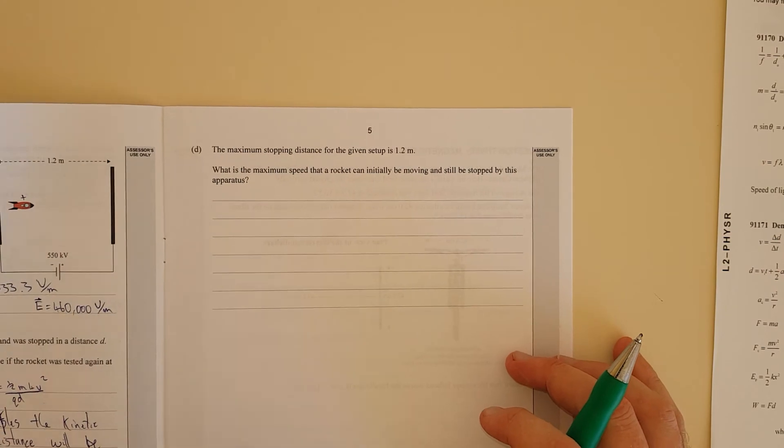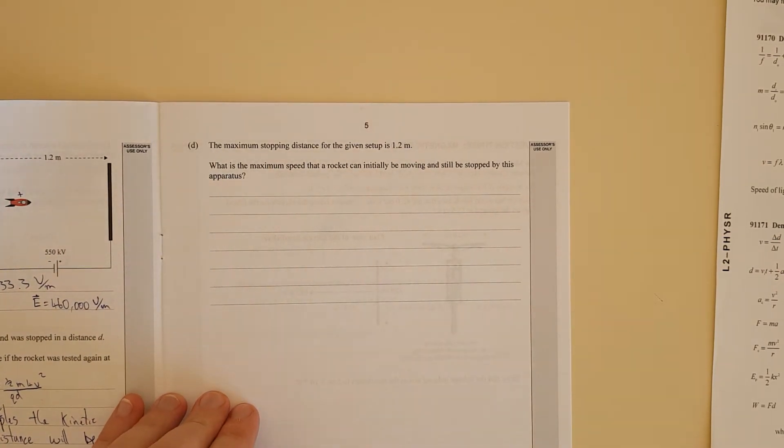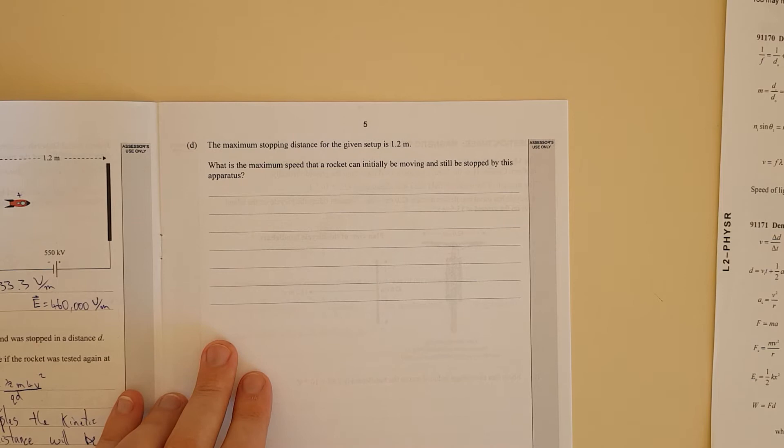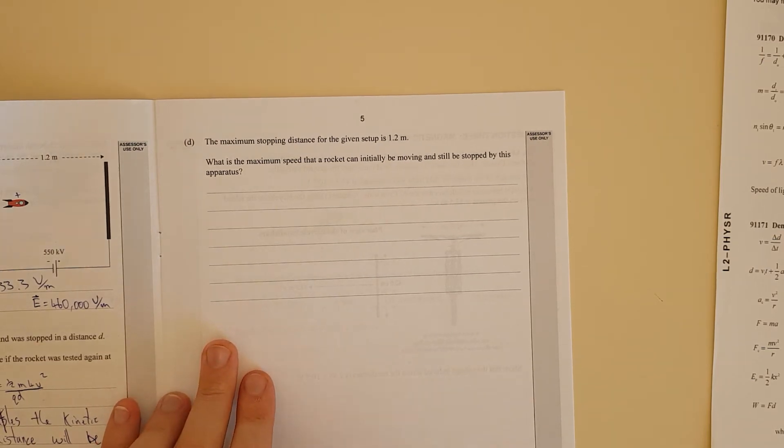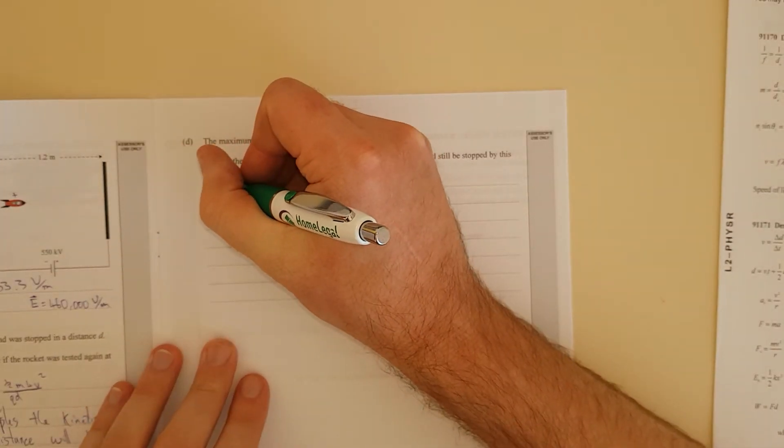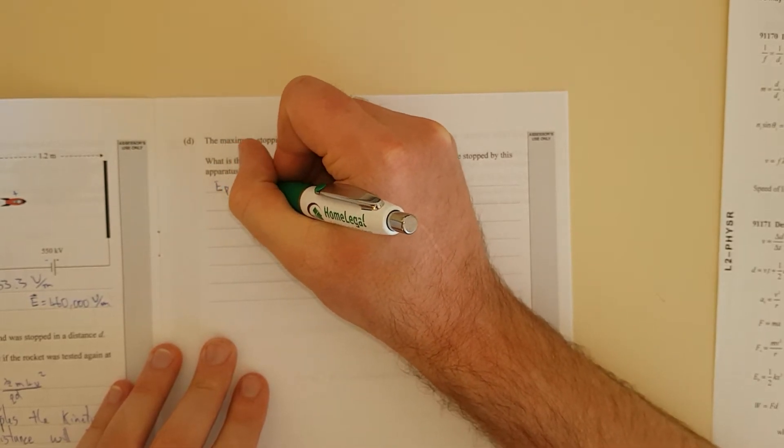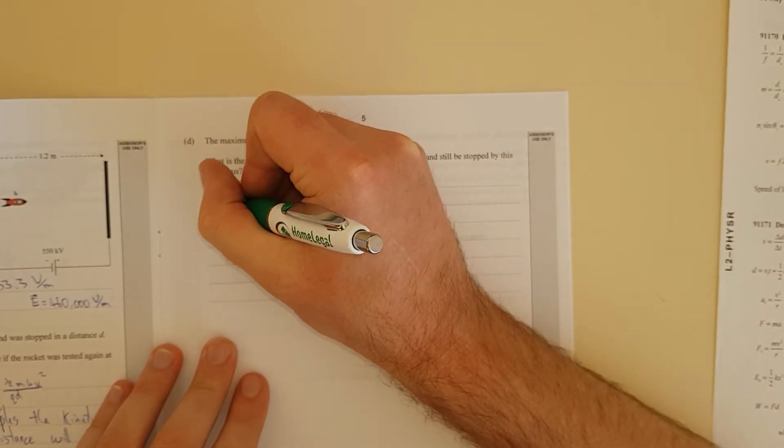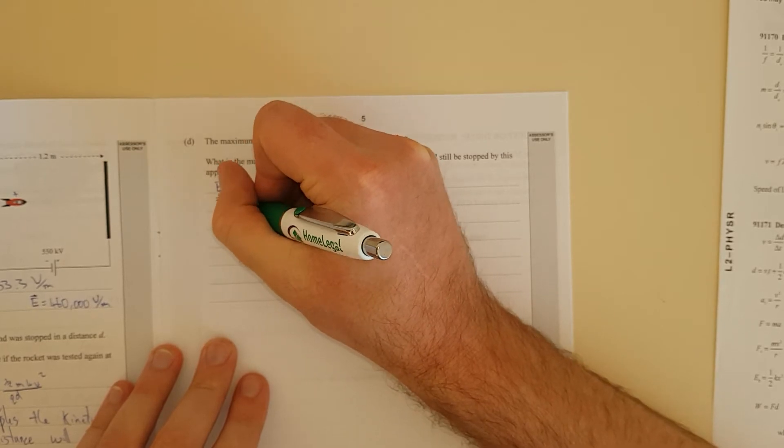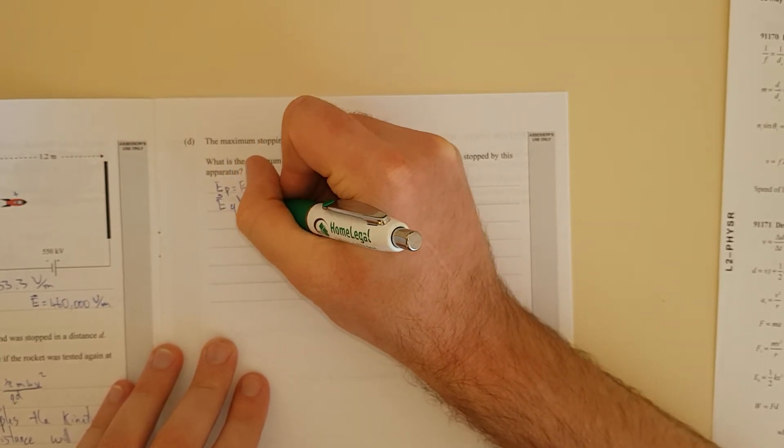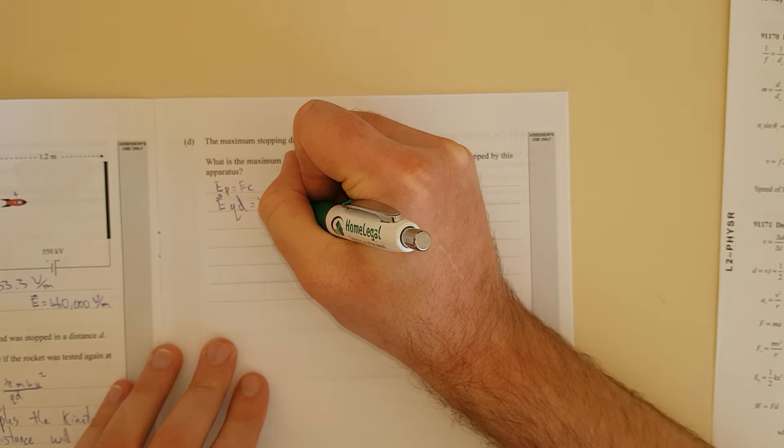Next question. The maximum stopping distance for the given setup is 1.2 meters. What is the maximum speed the rocket can initially be moving at and still be stopped by this apparatus? This is literally just going to be the previous question. So we're going to have EP to EK. And we're going to have E, this is electric field, Q, D is equal to half M, V squared.